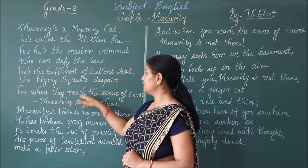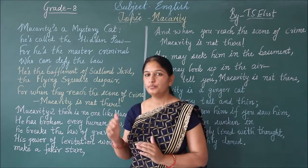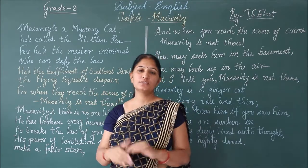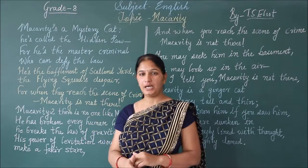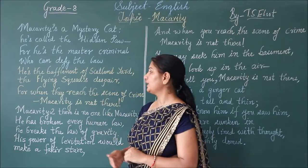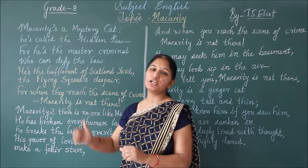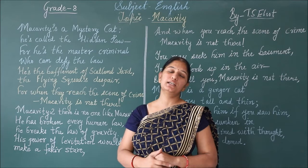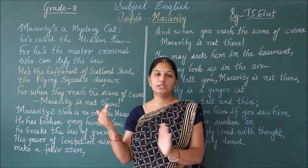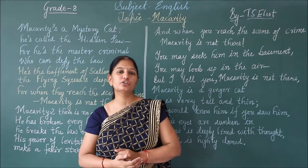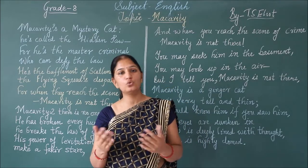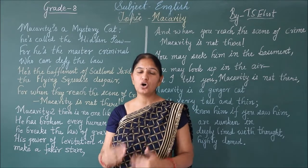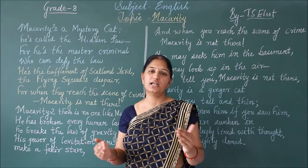When they reach the scene of crime, McCavity is not there. McCavity commits the crime and vanishes away very soon. These detective agencies — Scotland Yard and Flying Squad — cannot find him at the place of crime. McCavity, McCavity — there is no one like McCavity. The letter M is repeated, so here alliteration is the figure of speech. There is no one like McCavity because he commits crimes in such a way that he cannot be caught.